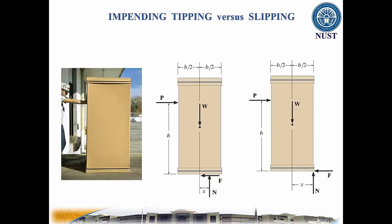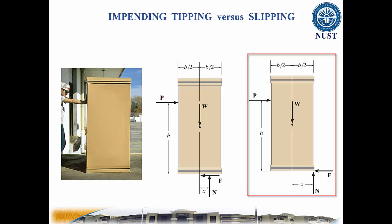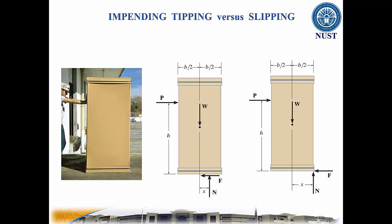For a given W and H of the box, how can we determine whether the block will slide or tip first? In this case, we have four unknowns — F, N, X, and P — and only three equations of equilibrium. Hence, we have to make an assumption to give us another equation: the friction equation. Then we can solve for the unknowns using the three equations of equilibrium.